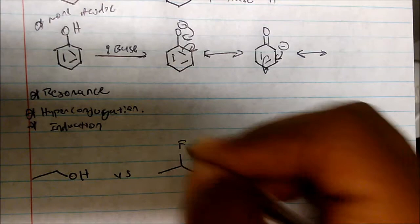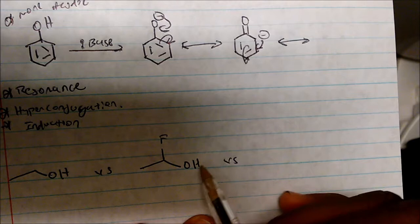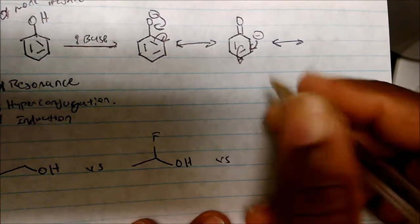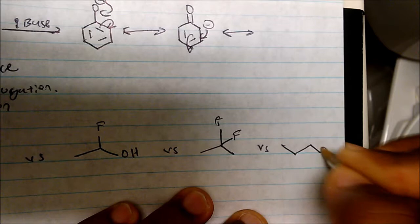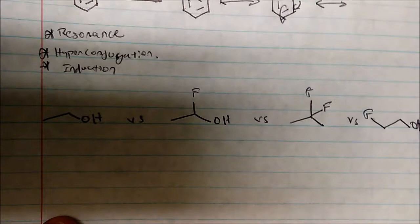Now what if I give you a sequence of four alcohols and ask you to rank them in terms of which is most acidic? When we talk about the acidity of alcohols, we're talking about how easy it is to remove one of those hydrogens to form the conjugate base. Rank these with number one being the most acidic and number four being the least.